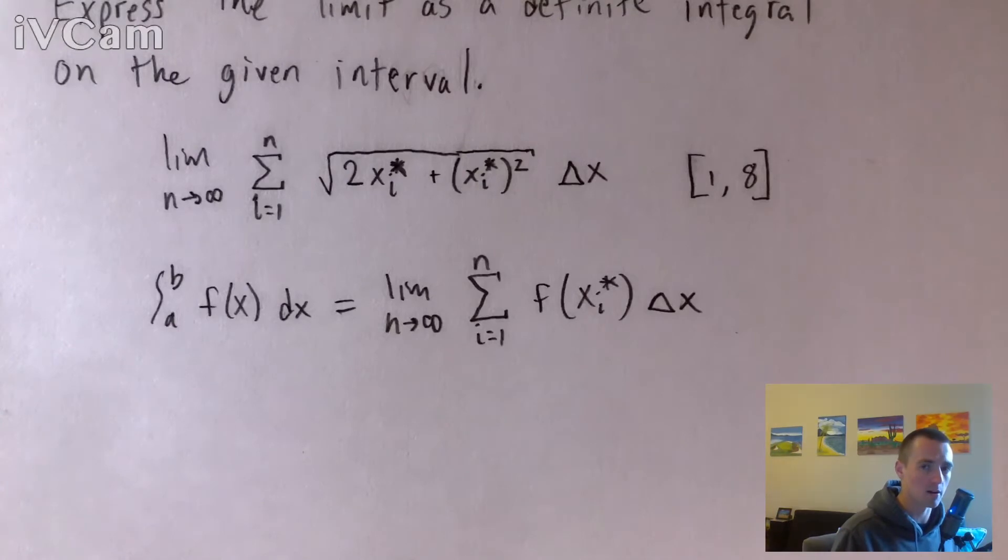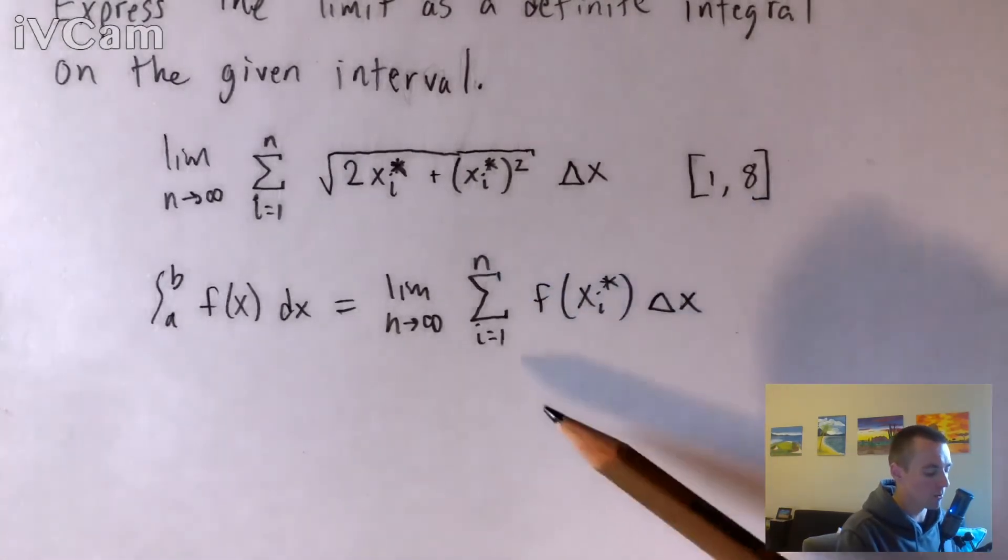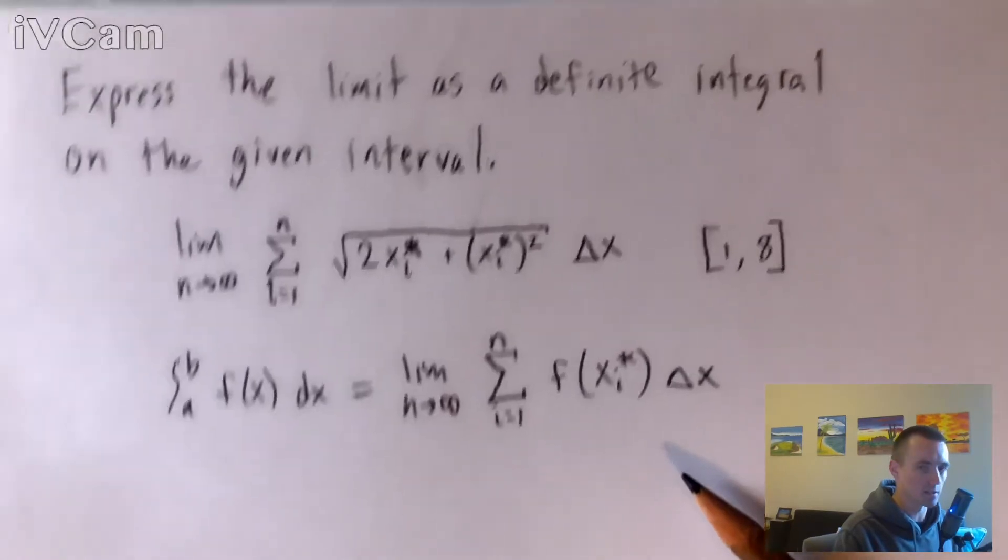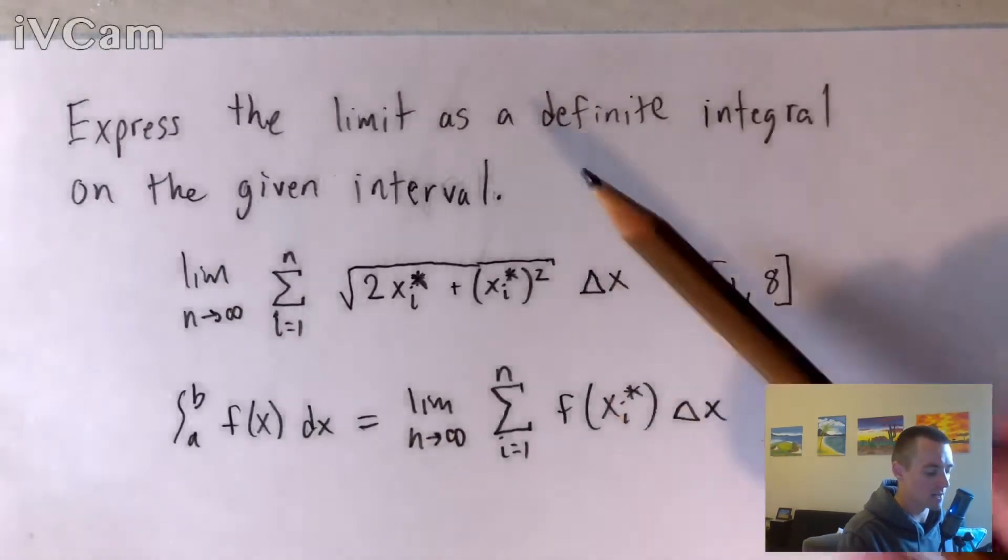And then we're going to multiply that by delta x, which is the step width from each step as you kind of split the area up into those smaller sections. So basically what we want to do here in order to express this limit that we were given as a definite integral,